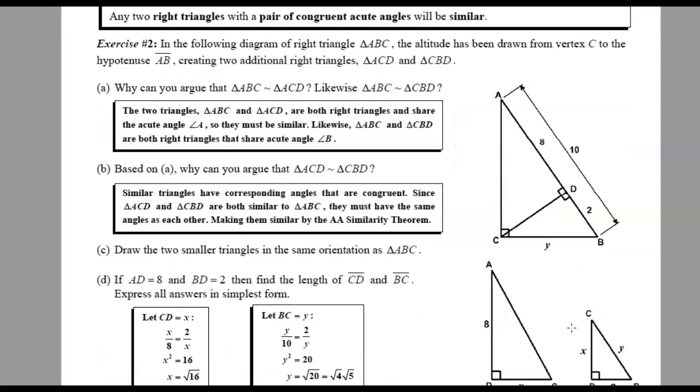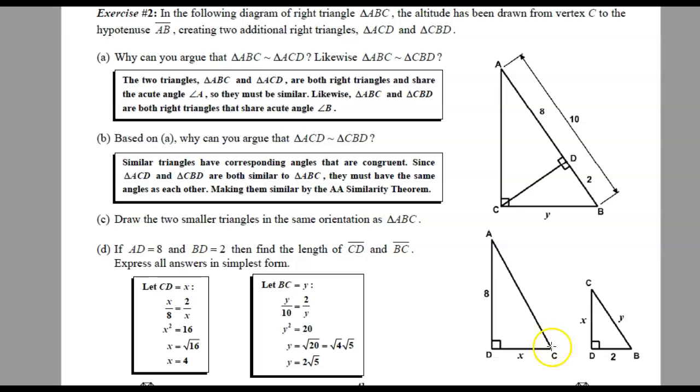So if we draw those two smaller triangles in the same orientation as ABC, we're trying to make them look tall, so to speak, so that the longer leg is vertical and the shorter leg is horizontal. That's the way the original triangle was drawn, so that's the way we reflect and rotate these to draw them. So if I'm told that AD is 8 and that BD is 2, I can put those into the original diagram and know that the whole hypotenuse of the original triangle was 10.